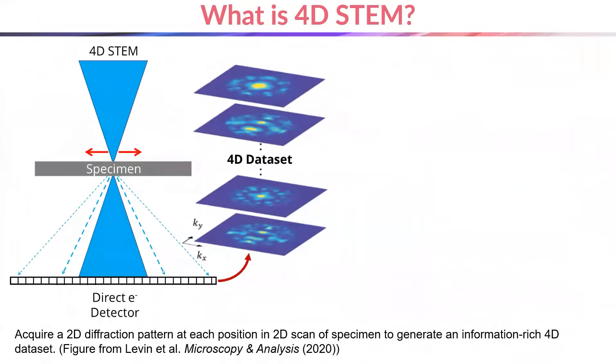We'll begin with an overview of the technique. In traditional STEM, a focused electron beam is rastered point by point over a specimen and a signal is recorded to form a two-dimensional image of the specimen.